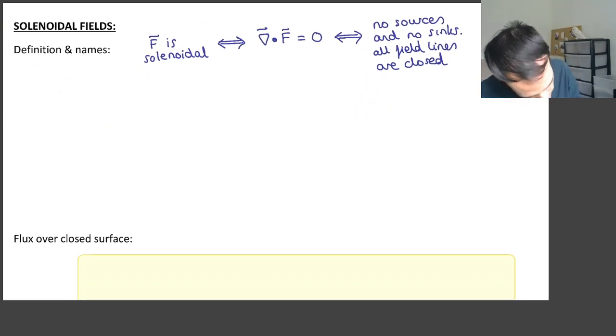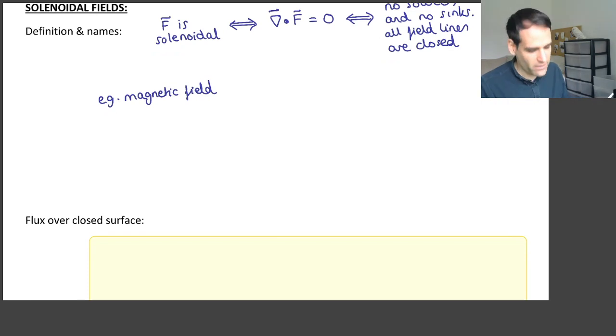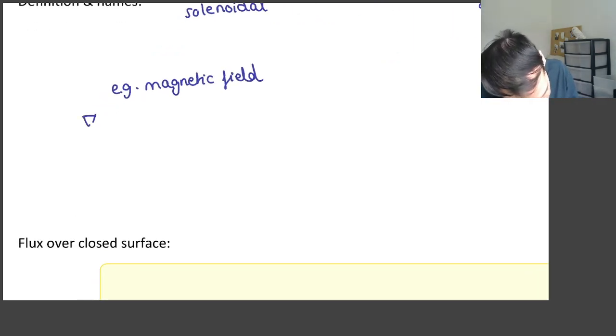An example of a solenoidal field is the magnetic field. Actually, the magnetic field has a divergence of B is equal to zero.